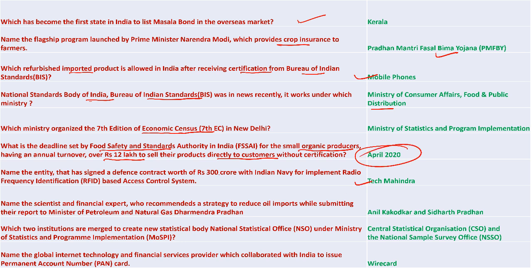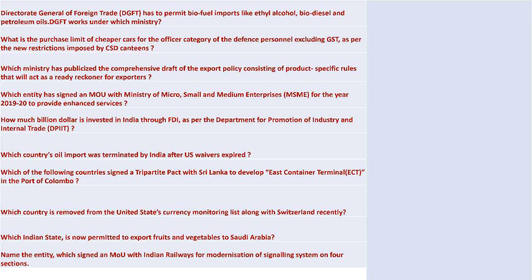Tech Mahindra signed a defense contract worth 300 crore with the Indian Navy to implement radio frequency identification-based access control system. Anil Kakodkar and Siddharth Pradhan recommended strategies to reduce oil imports in their report to the Ministry of Petroleum and Natural Gas. The Central Statistics Office and the National Survey Office were merged to create the National Statistics Office - remember under whose recommendation this was done. Wirecard is the global internet technology and financial services provider that collaborated with India to issue PAN cards.